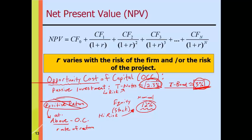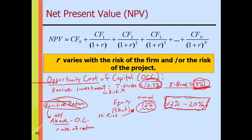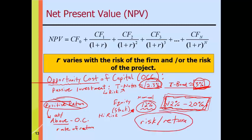For high-risk equity-financed business investments, we might be looking at discount rates in the 12–20% range. That sounds like fantastic rates of return, and it should, because many of these investments will fail. If we run 10 projects and two fail, even if they all average 15% return, the failures pull that average down — so the riskiness justifies the higher discount rate. Remember, it's all about the risk-return tradeoff: higher risk, higher return; lower risk, lower return. That's a fundamental principle of finance.